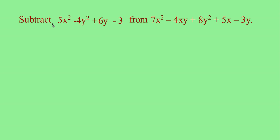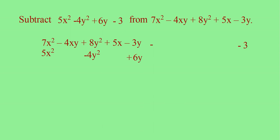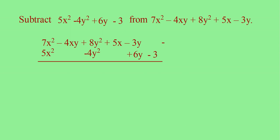Now let us see how to subtract. Here you have to subtract 5x squared minus 4y squared plus 6y minus 3 from 7x squared minus 4xy plus 8y squared plus 5x minus 3y. So first write 7x squared minus 4xy plus 8y squared plus 5x minus 3y, then subtract 5x squared minus 4y squared plus 6y minus 3. As in the previous case, arrange the terms so that like terms are in the same column.